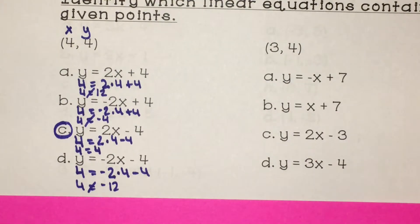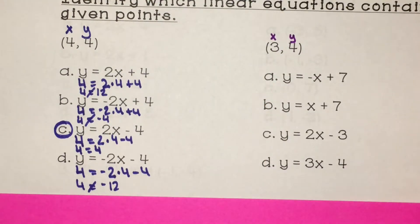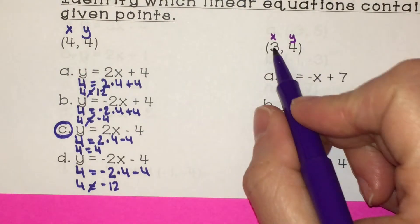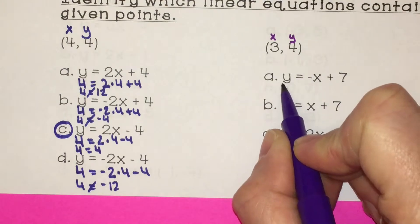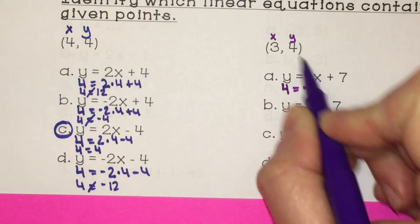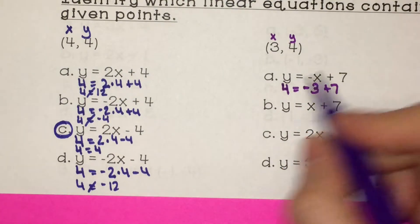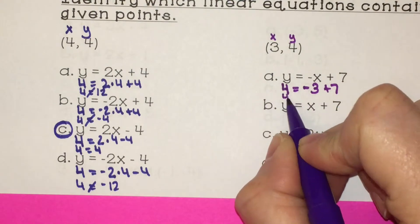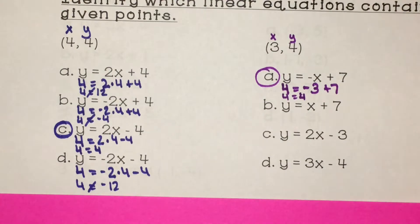Same exact thing over here. This time plug in 3 for x and 4 for y and see which one the two sides are equal on. So if we plug in 3 for x and 4 for y: y is 4 equals negative x is 3 plus 7. This gives me 4 equals negative 3 plus 7 is 4. The two sides are equal, so that one works.